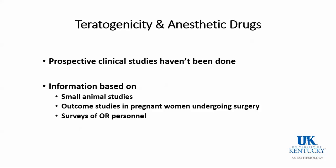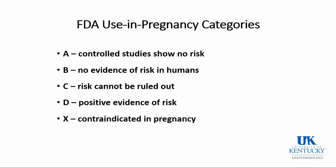The FDA has a use-in-pregnancy categorization for drugs, with categories A through D and then X. Category A means controlled studies showed no risk, but very few drugs achieve this. Category B indicates no evidence of risk in humans or no prospective controlled trials, but there may be a long history of women receiving these drugs without evidence of risk.